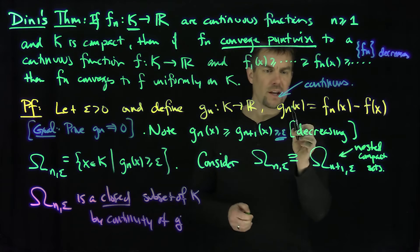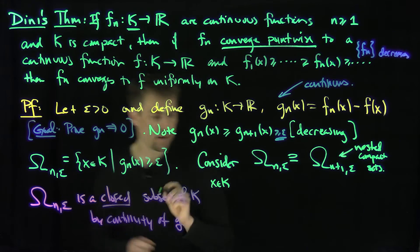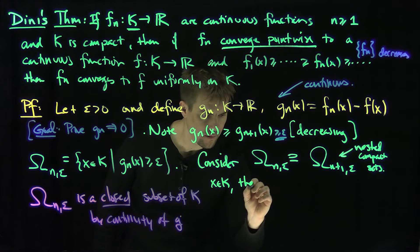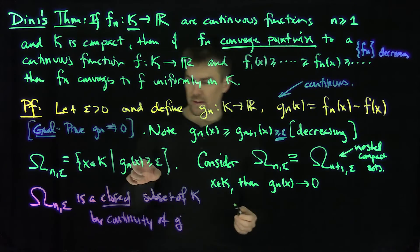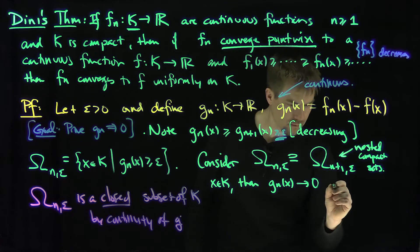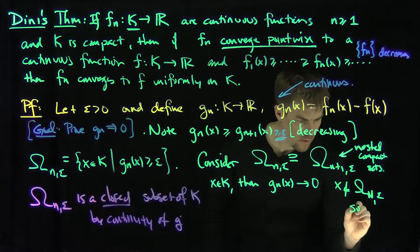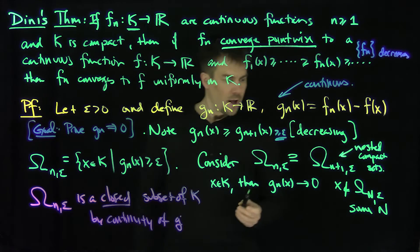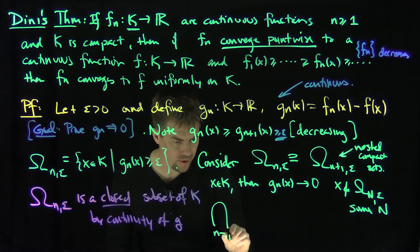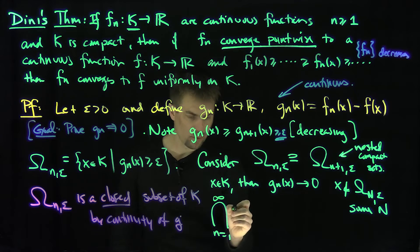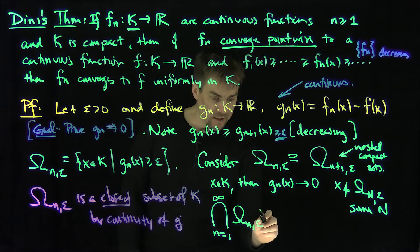For a fixed x in k, g_n of x converges to zero as n goes to infinity. This means that eventually, for some n, x is not in omega_n of epsilon. So the intersection from n equals 1 to infinity of omega_n of epsilon is empty, since every x eventually falls outside of these sets.